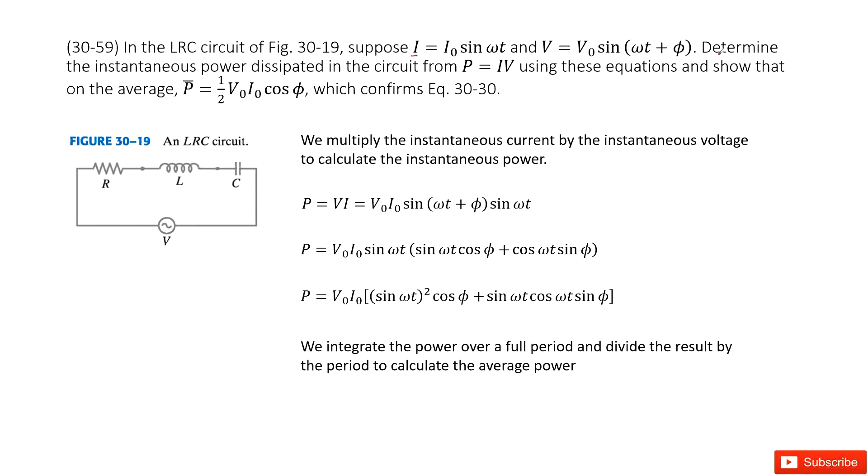We need to determine the instantaneous power consumed in the circuit from P = I × V using these equations to show that average. This is very straightforward. The problem tells you how to solve it. First you need to look at the instantaneous power and then find the average about this power.